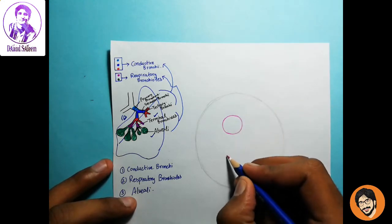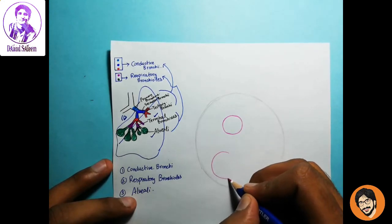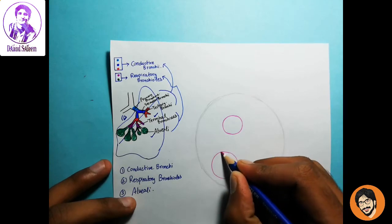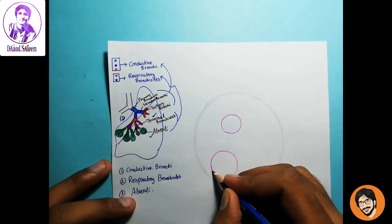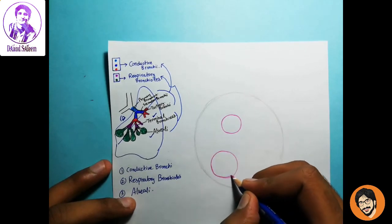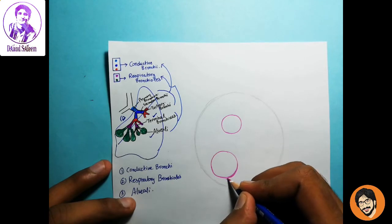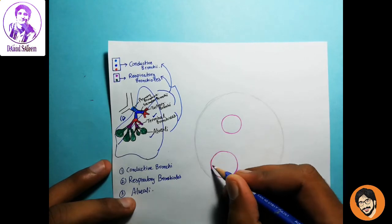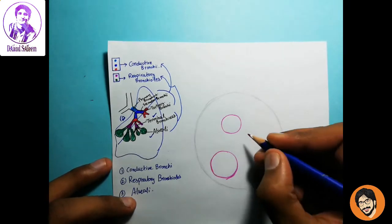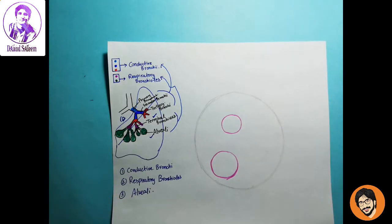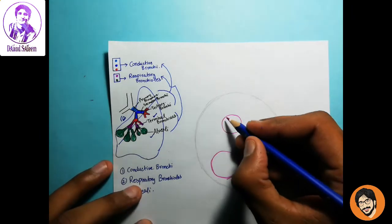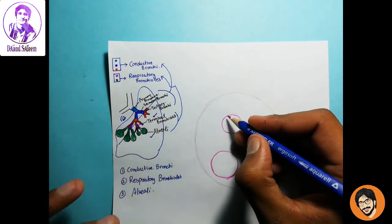Here we have a tertiary. We have said that bronchioles are the same as the bronchi except that they don't have cartilage and glands. It means that everything will be the same.